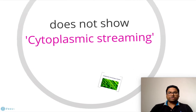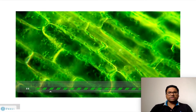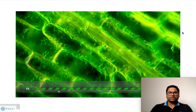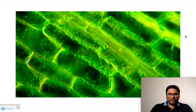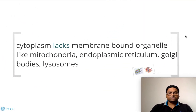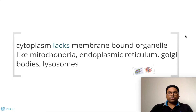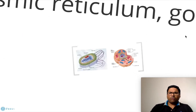Prokaryotic cytoplasm does not show cytoplasmic streaming. Cytoplasmic streaming, as seen in eukaryotic cells, is not found in prokaryotic cells. Additionally, the cytoplasm lacks many different membrane-bound organelles like mitochondria, endoplasmic reticulum, Golgi apparatus, and lysosomes.